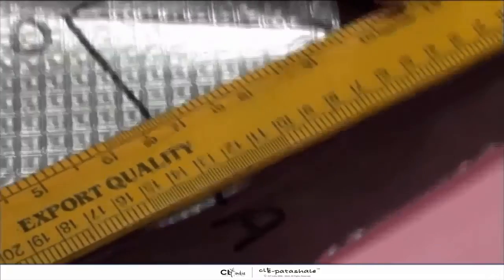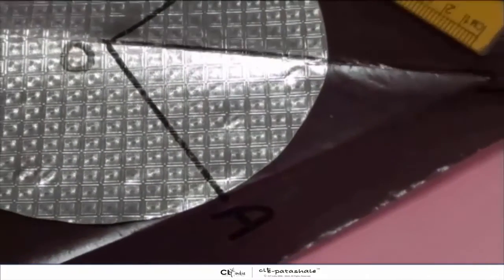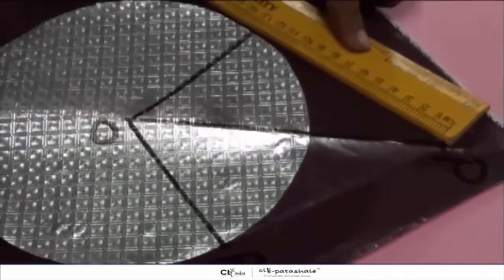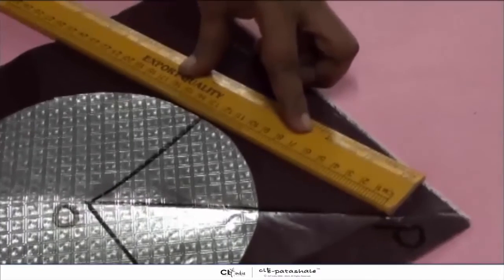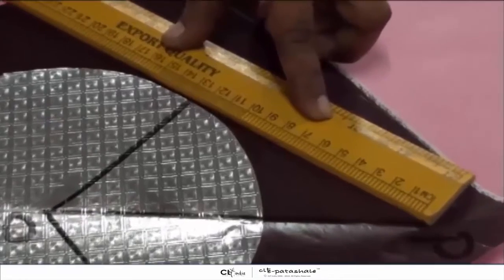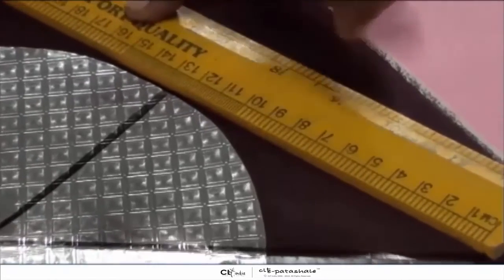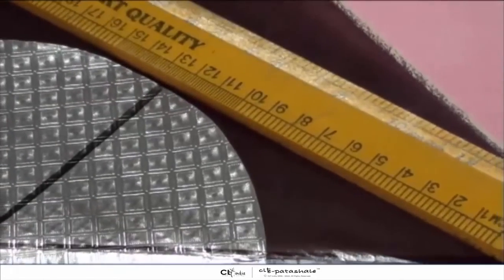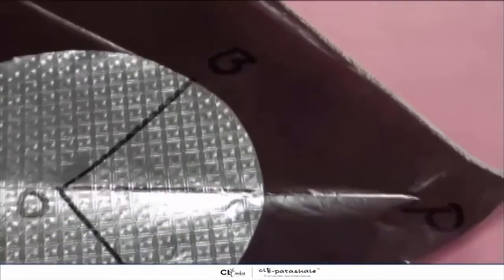After that we will measure the length of PB which is also equal to 13 cm. So what can we conclude from this? We can say that length of PA is equal to length of PB.